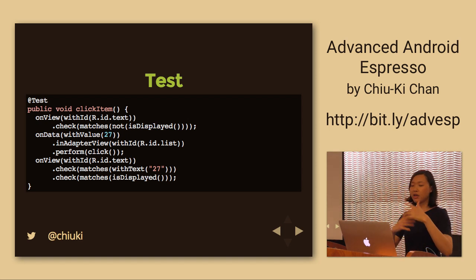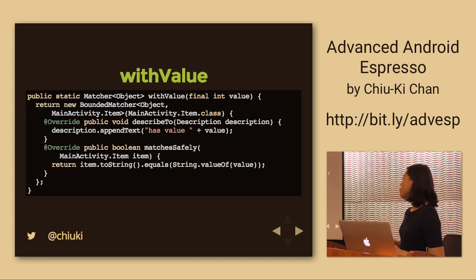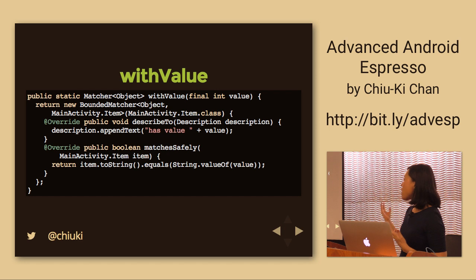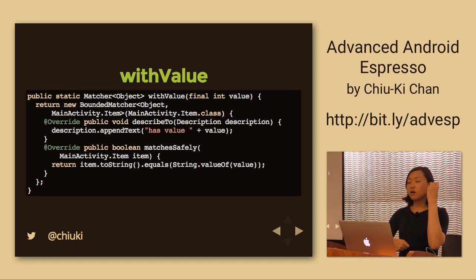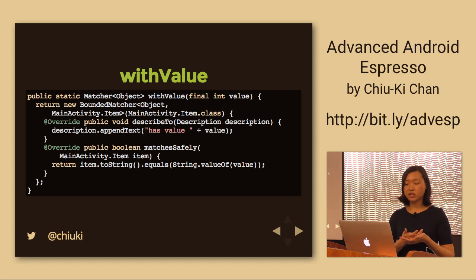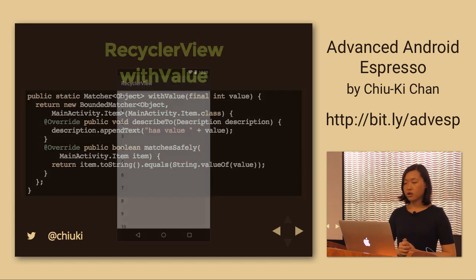The withValue part is the BoundedMatcher we write. This time instead of binding to a particular view it binds to an Item. Espresso calls matchesSafely and returns a boolean indicating whether it's a match. We convert the item to a string and match the displayed string.